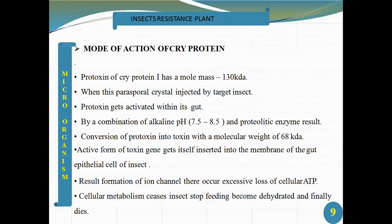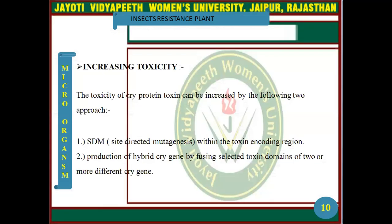The active form of the toxin inserts itself into the membrane of the gut epithelial cells of the insect, resulting in the formation of ion channels. This causes excessive loss of cellular ATP and disruption of cellular metabolism. Insects stop feeding, become dehydrated, and finally die. The toxicity of cry protein toxin can be increased by site-directed mutagenesis and by production of hybrid cry genes by fusing selected toxin domains of two or more different cry genes.